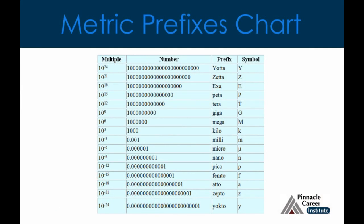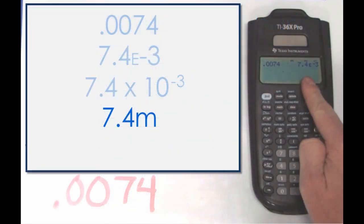Now take a look at this metric prefixes chart, and see if you can tell which symbol we should use to simplify this further. That's a lower case m, which stands for milli.